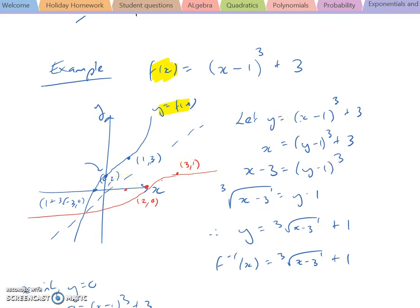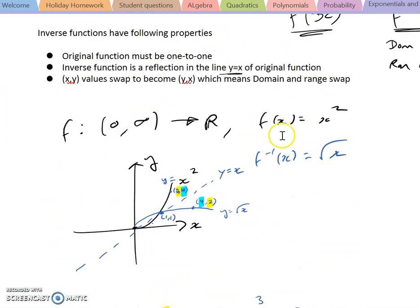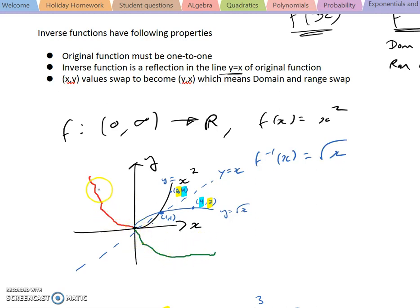The only tricky part is ensuring that your original function is one-to-one. Because if you look at y equals x squared in its entirety, it's not one-to-one — y equals positive root x is the inverse for one part, and y equals negative root x would be the inverse of the other part. So you may have to restrict domains in order for an inverse function to exist.